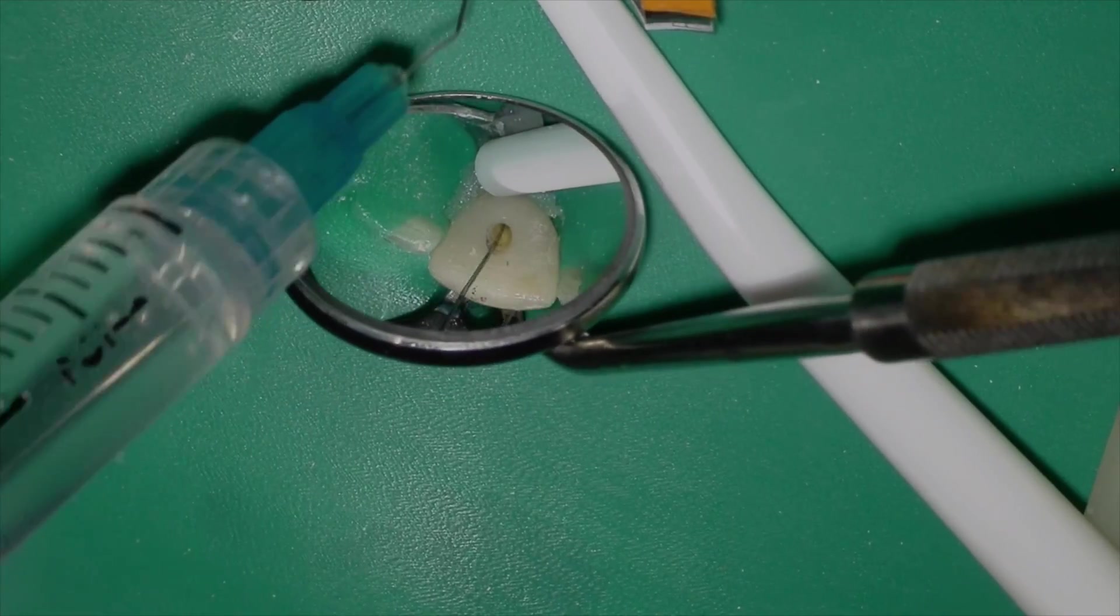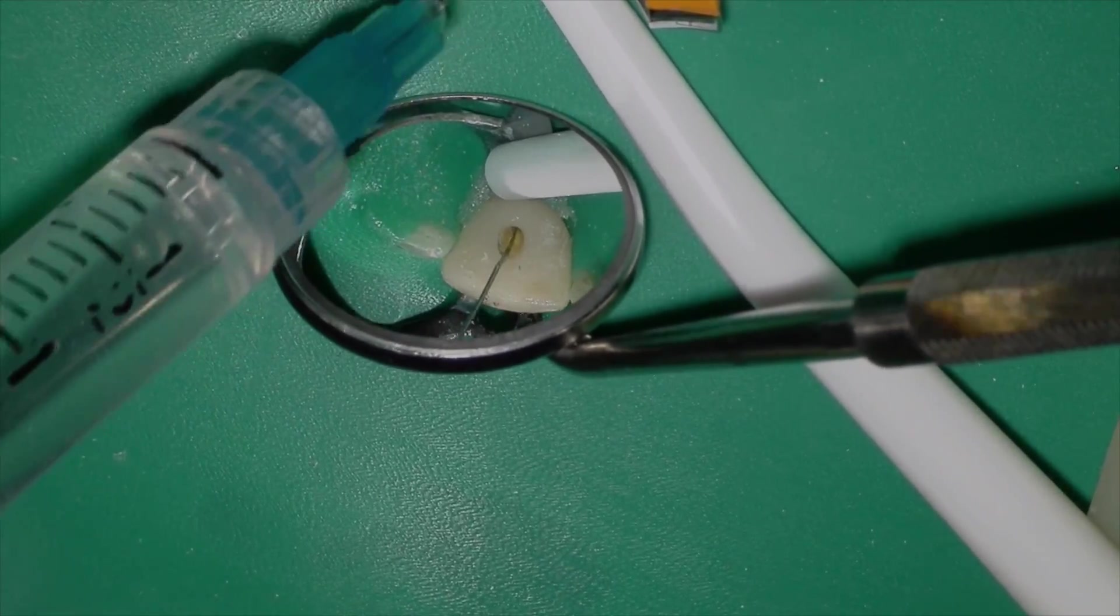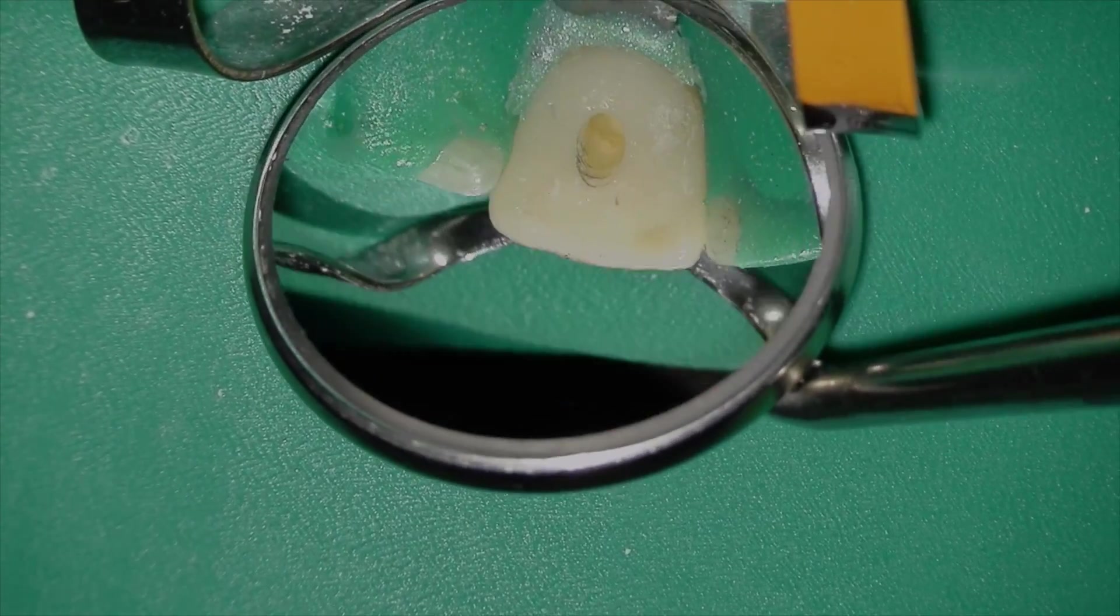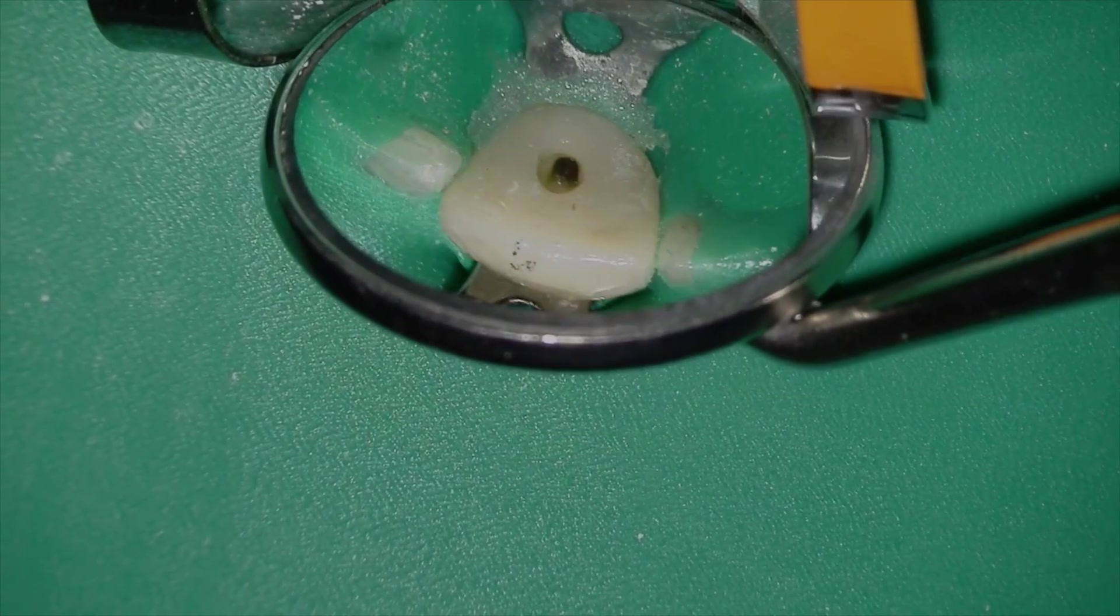And again, we're going to irrigate now after Wave One Gold medium with lots of full strength hypochlorite. And here is a final look at the preparation. There's a little bit of a dentin ledge that I'm not going to remove. I'm not happy with it, but it is what it is.